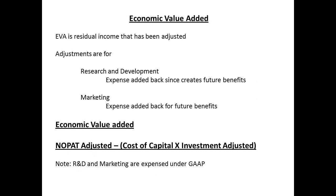Economic value added starts by making adjustments to residual income. The adjustments add back the expenses of research and development, since these can create future benefits, and for marketing, since this is expected to give a future benefit. Under GAAP, both R&D and marketing are expenses, so we are adjusting these. Thus, economic value added becomes the NOPAT figure after adjustment, less the cost of capital multiplied by the adjusted figure for the investment.